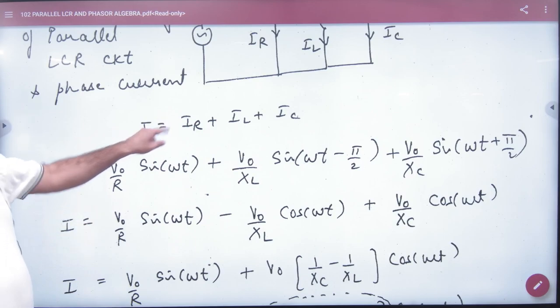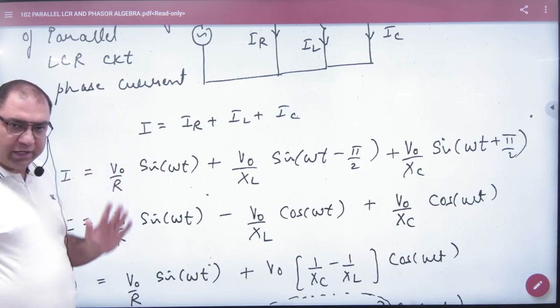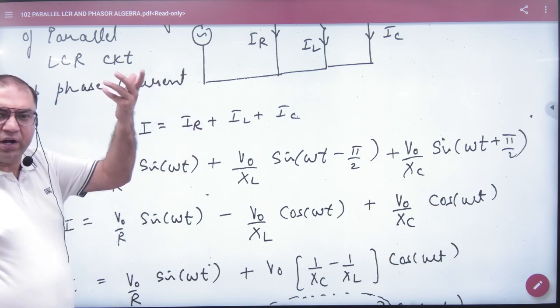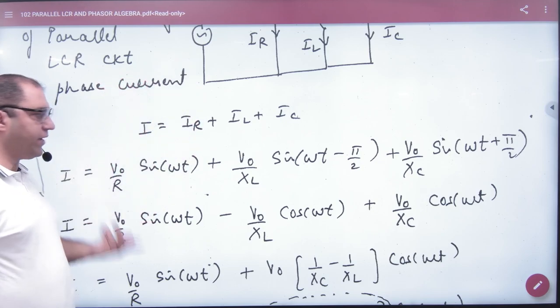Now, if we do the representations of current, what will be the current in the resistor? I₀ sin(ωt). If voltage is V₀ sin(ωt), then the current is I₀ sin(ωt), where I₀ = V₀/R.